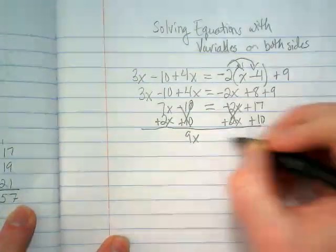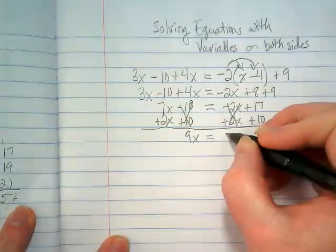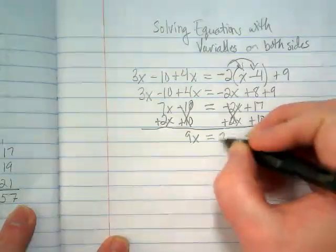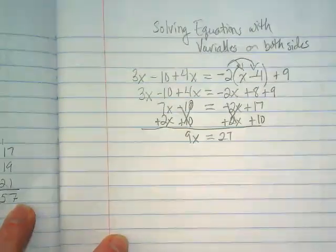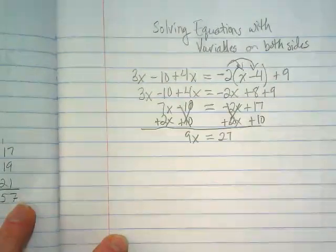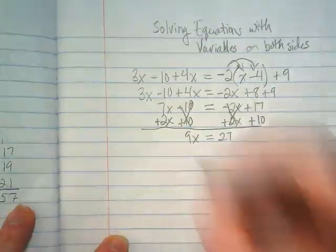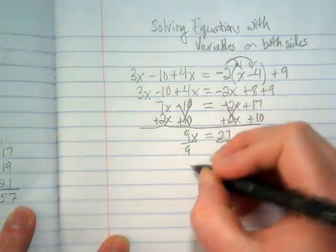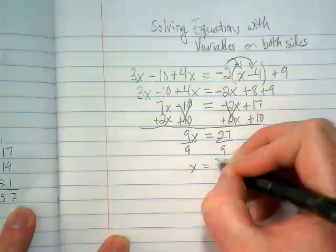We end up with 9x is equal to 27. And what are we going to do with that 27? Divide it by 9. Divide by 9. And we get x is equal to 3.